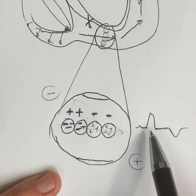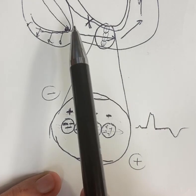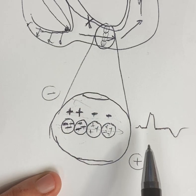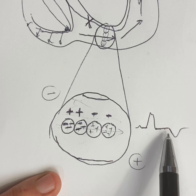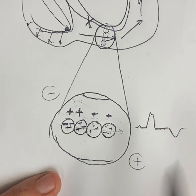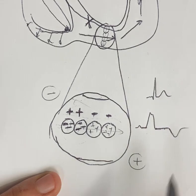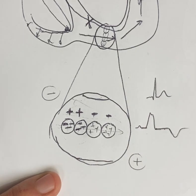So once again, in a bundle branch block or a paced rhythm, when the ventricle is depolarizing lengthwise, it should be expected that the T wave be opposite the QRS as opposed to a normal scenario of a narrow QRS and a concordant T wave.